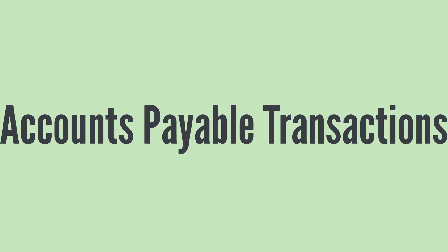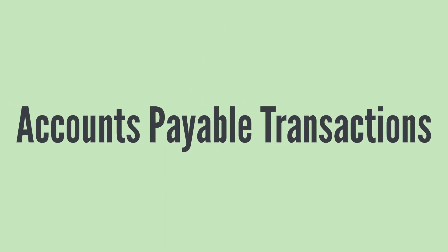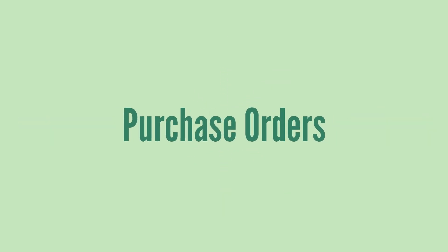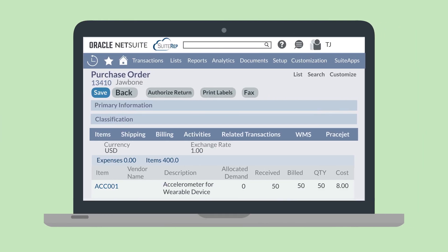Once your account is set up with the accounting and AP features and once you have your vendor records in order, you're ready to start the AP transaction process. We'll start with purchase orders. Purchase orders, or POs, initiate NetSuite's AP workflow. Essentially, the PO is where you outline exactly what you need and which vendor you will be purchasing from. This foundational step sets the framework for the AP cycle.